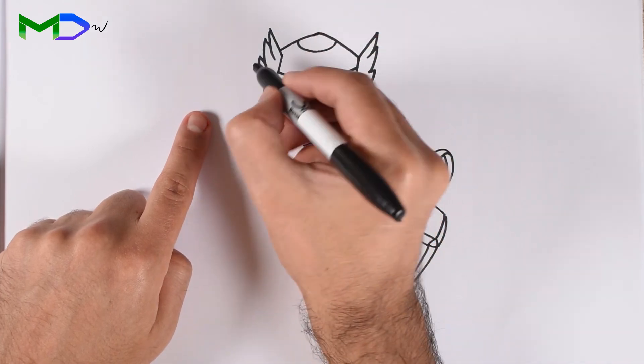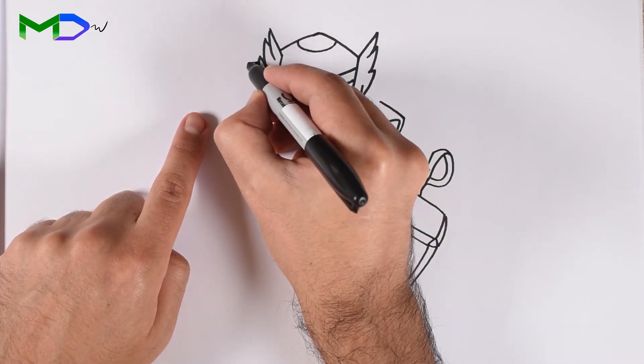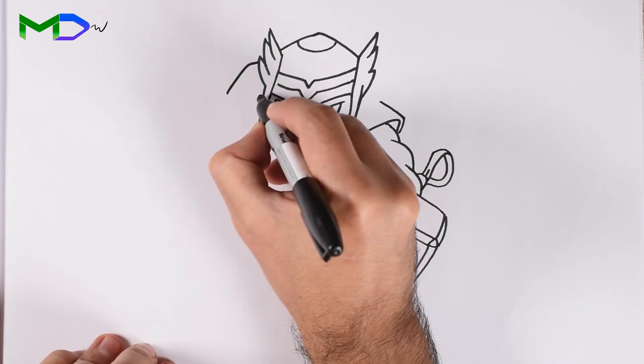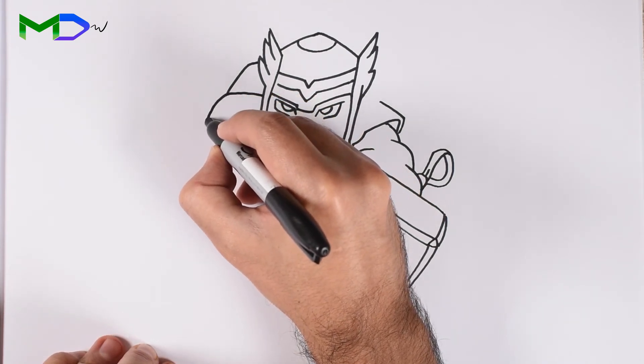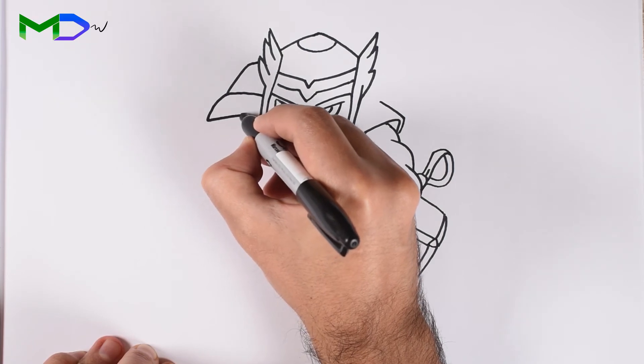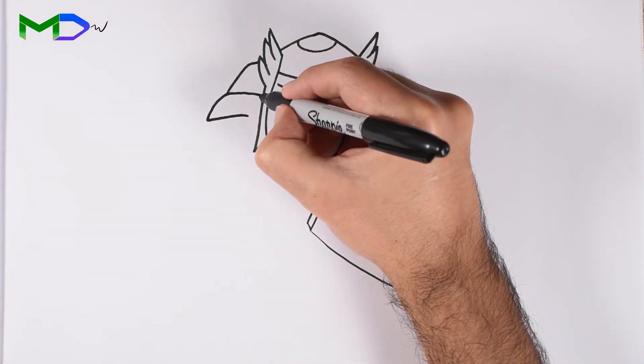Now let's go with the second arm. Start from one point at the top, going down. Then another line for the band wrist. Some extra lines for the hair.